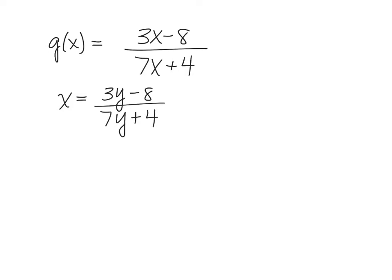And then we have to get rid of the division, so we'll multiply both sides by the denominator, the 7y plus 4, so we can eliminate that division.